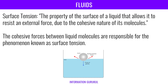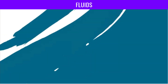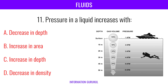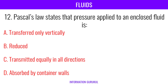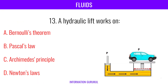Surface tension is the property of the surface of a liquid that allows it to resist an external force due to the cohesive nature of its molecules. Pressure in a liquid increases with increase in depth.